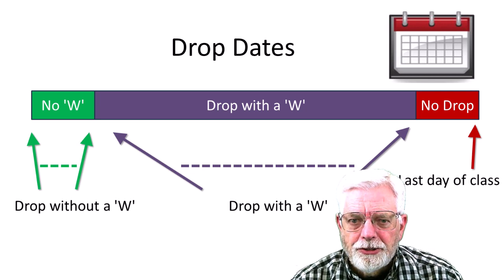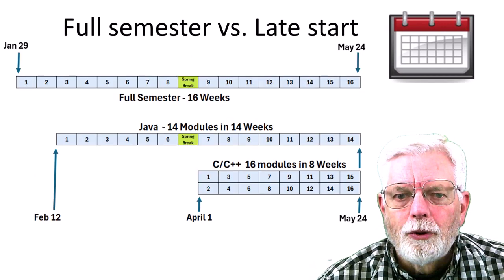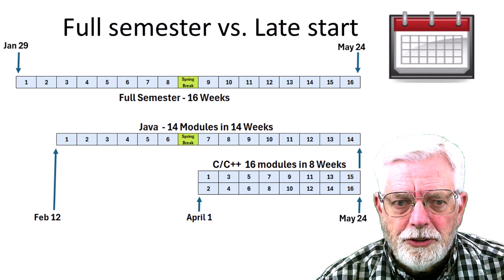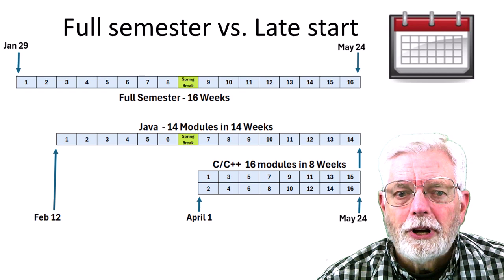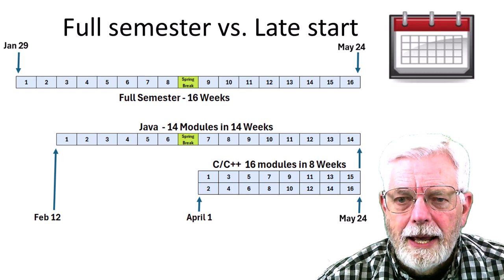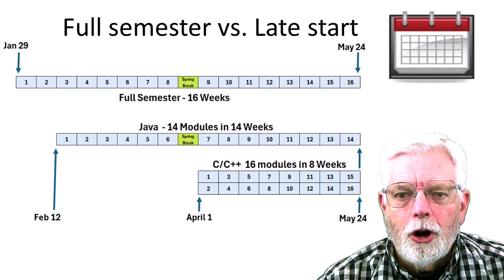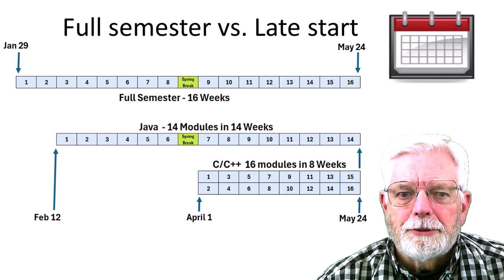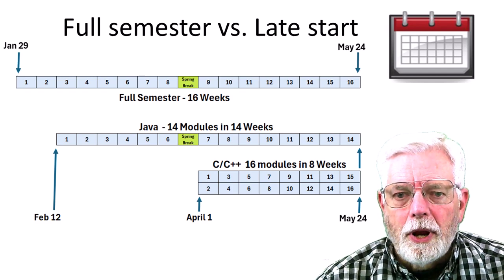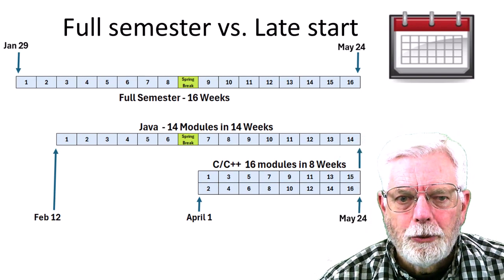Drop dates are based on a percentage of the number of days the class is taught. A full semester class has 16 weeks of instruction with spring break in the middle. Spring 2024 full semester classes start on January 29 and end on May 24. Both of my classes are late start classes. The Java class starts on February 12, and the C/C++ class starts on April 1 — April Fool's Day! Both of those classes end on May 24.